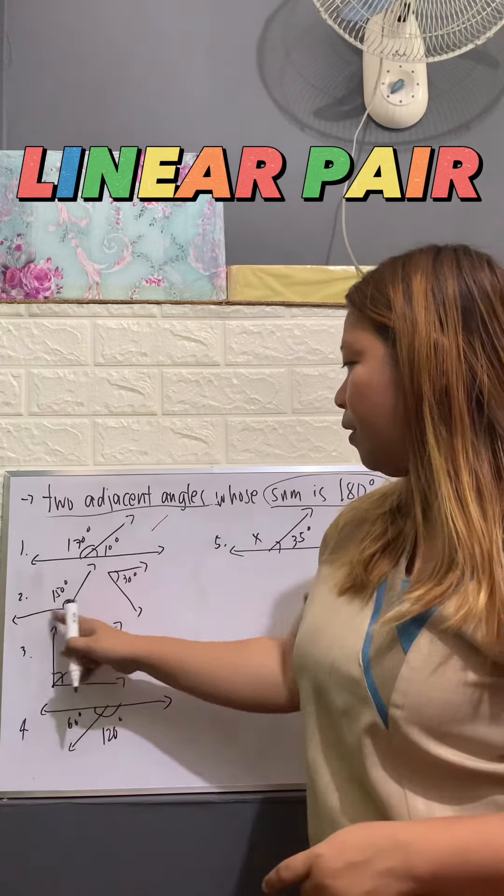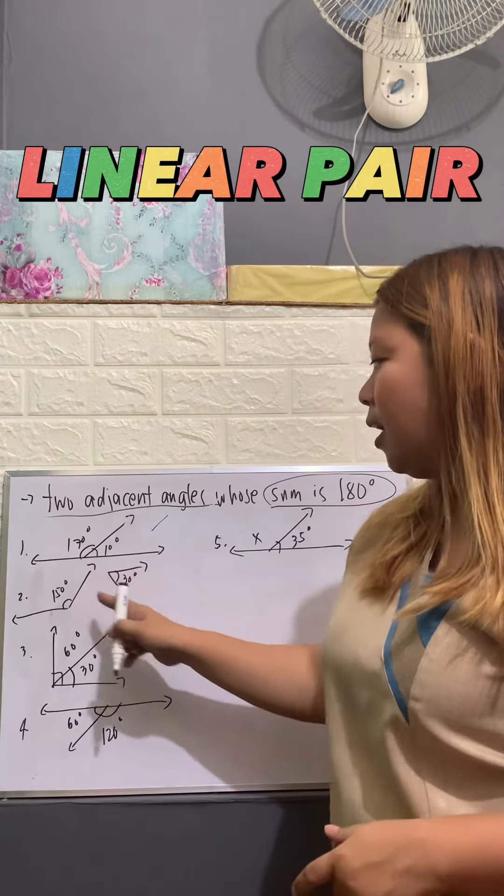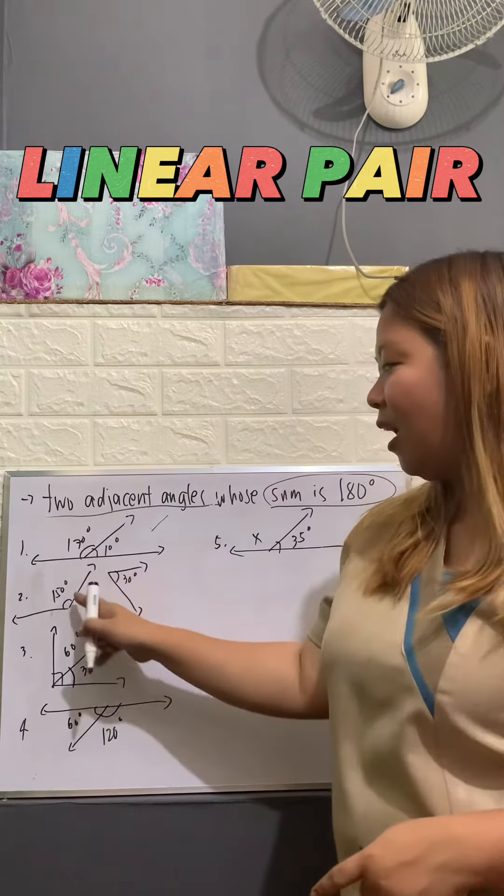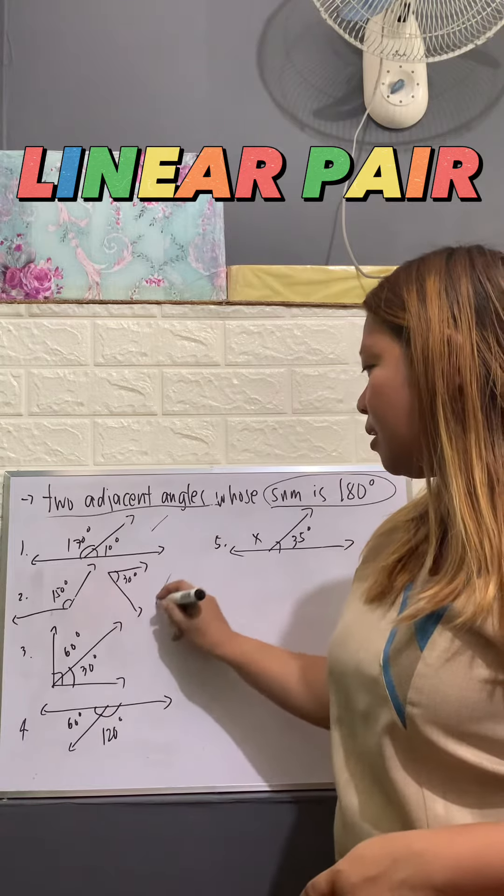How about if we have here 150 and then 30? The sum is 180 but they are not adjacent. So, this is not linear pair.